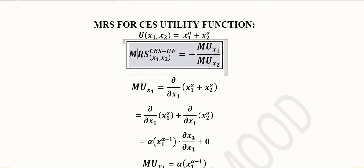We have to find out the marginal rate of substitution of the CES utility function between x1 and x2. The formula should remain the same, that is the ratio of the marginal utilities of the first and second goods respectively.